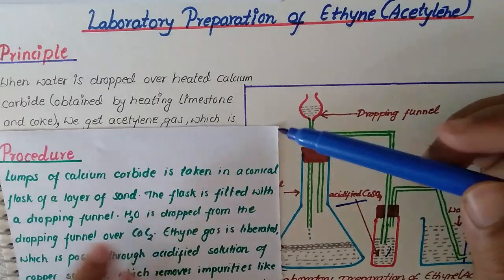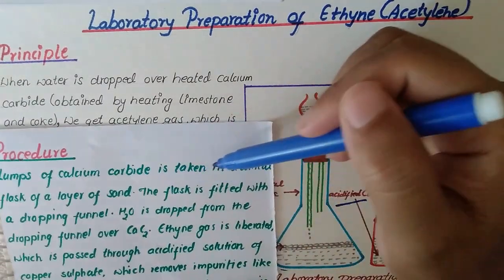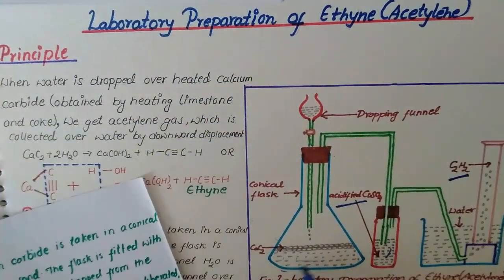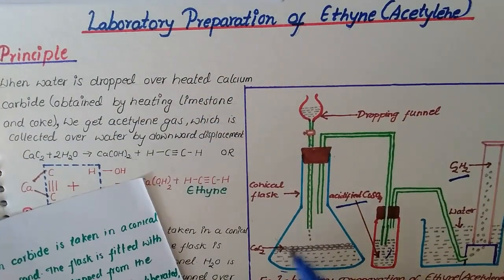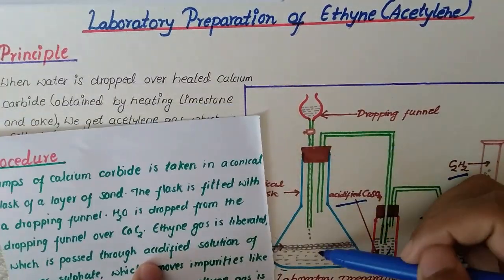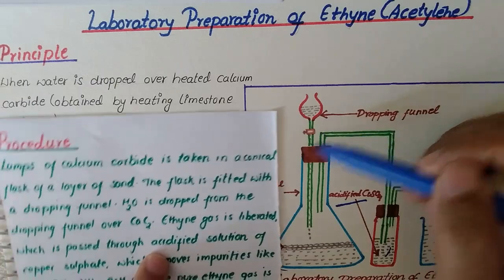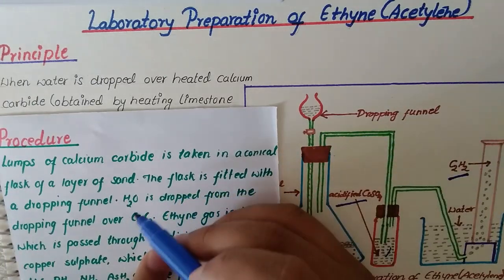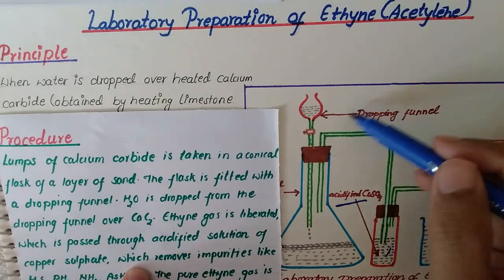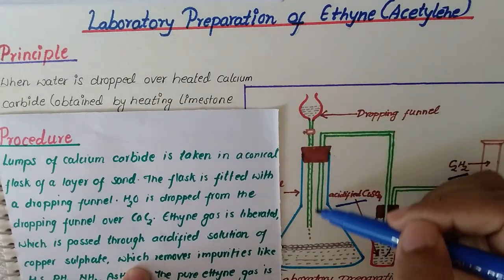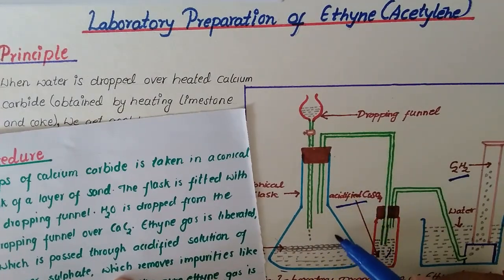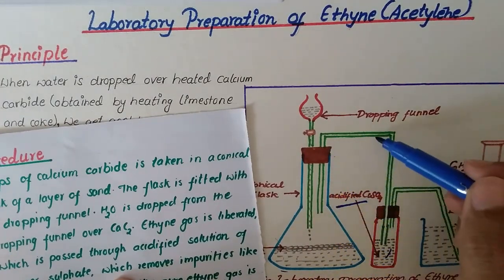In the procedure, lumps of calcium carbide are taken in a conical flask over a layer of sand. The flask is fitted with a dropping funnel.